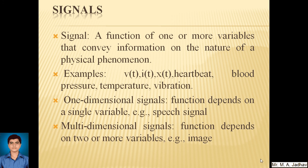Signal is a function of one or more variables that convey information on the nature of a physical phenomenon. Examples: V of T, I of T, X of T, heartbeat, blood pressure, temperature, vibration. So these are all types of examples of a signal.